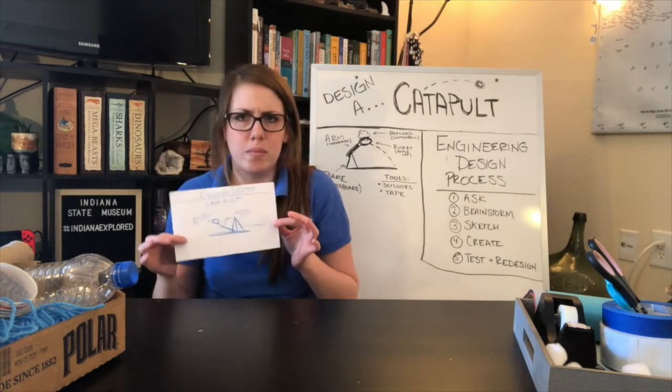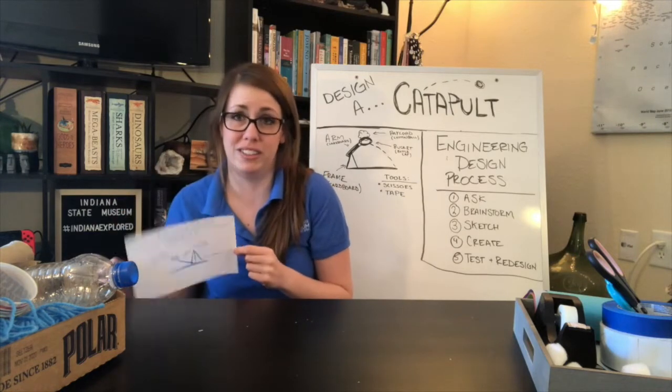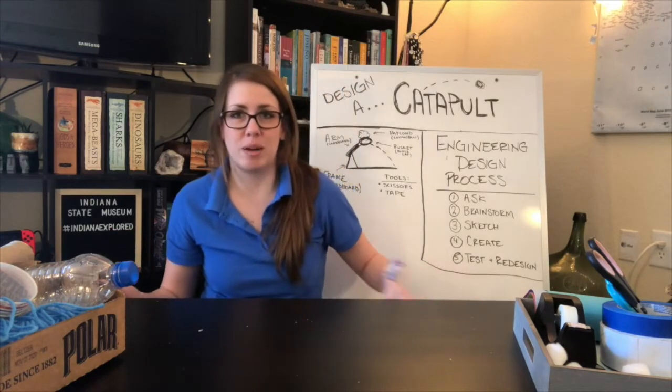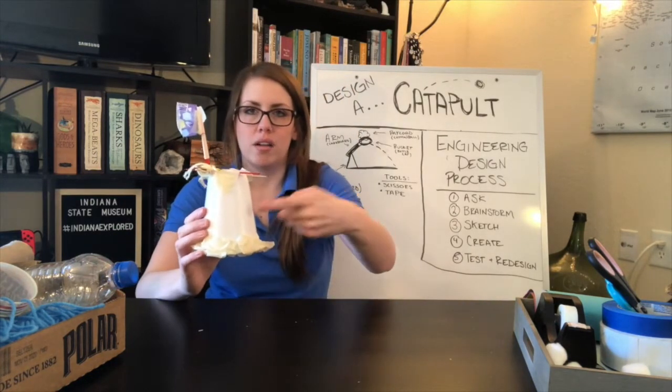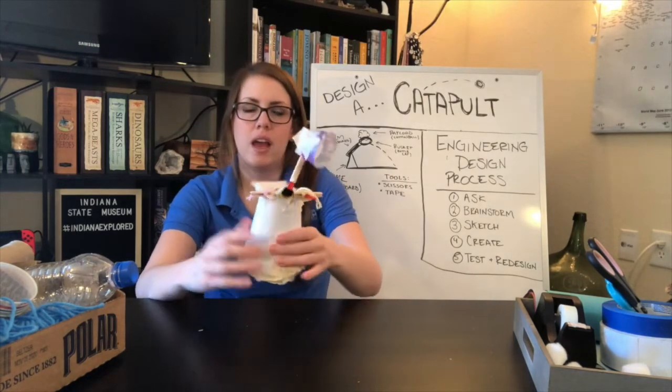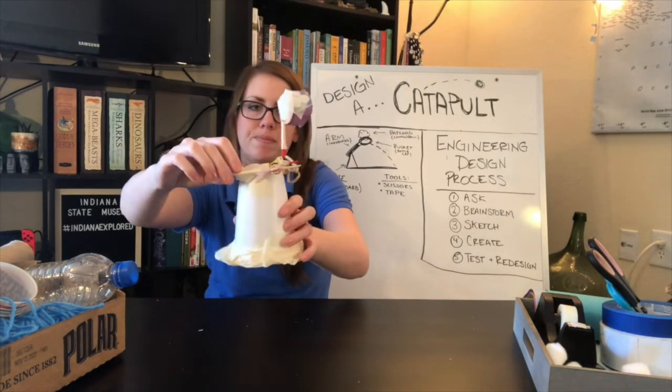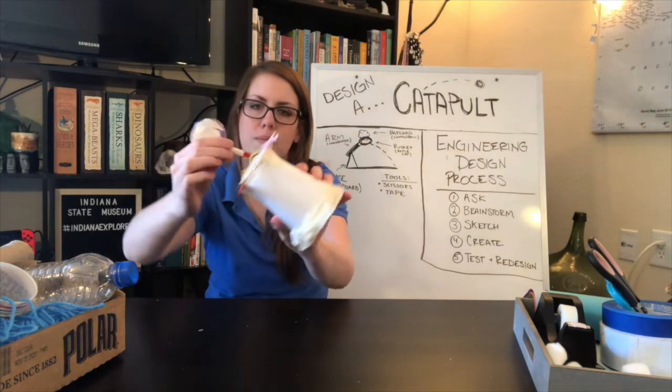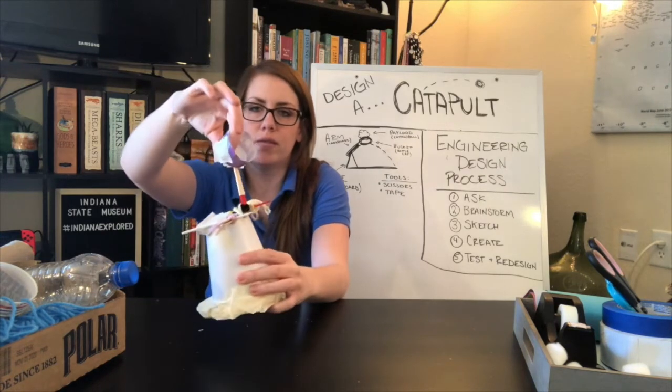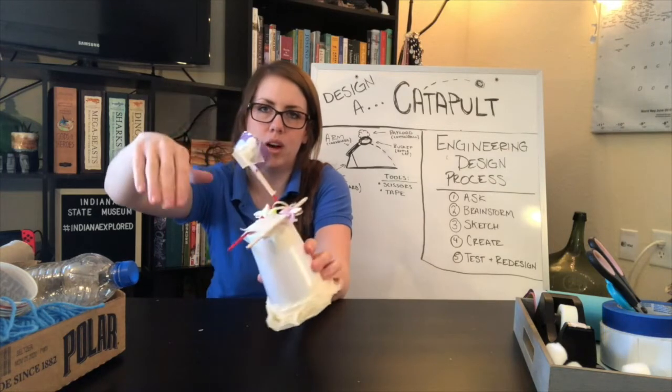And so after you've taken a few minutes and you've sketched out your design, this is now your blueprint. And you can use this as a reference as you build. And so I wanted to share with you today some designs that were already built. They used a styrofoam cup as the frame for their catapult. They've got some popsicle sticks that are held together with string up here. There's an arm that's made out of little coffee stir straws and some pipe cleaners down in here. And then the bucket right up here is made out of a little paper cup that's been cut off almost in half.